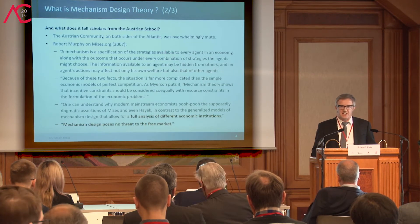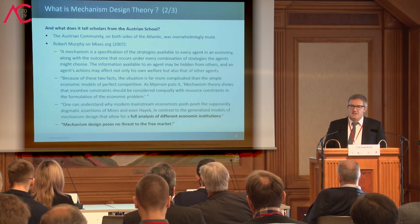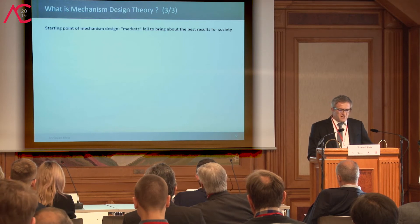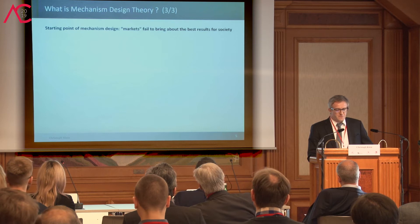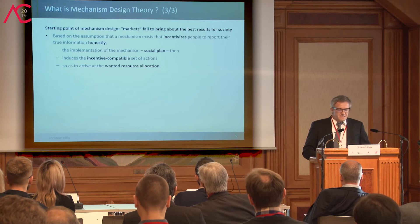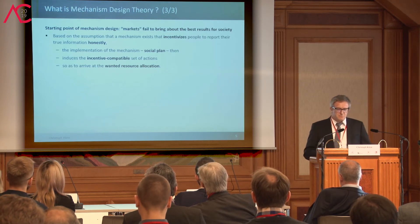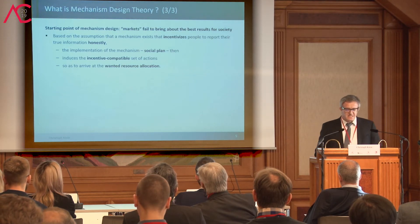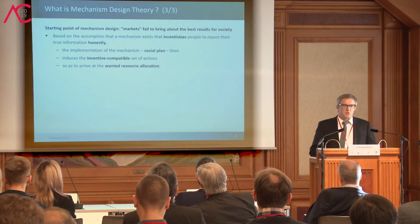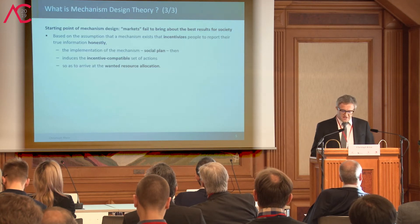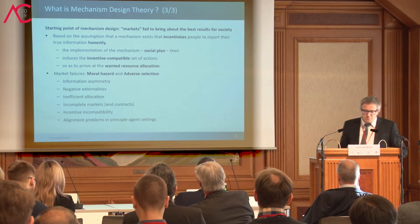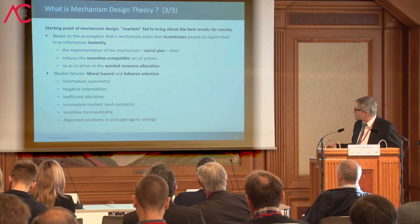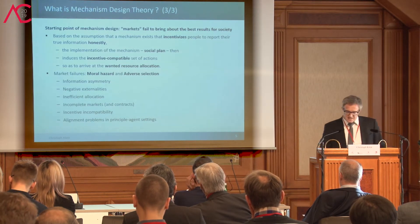Robert Murphy was the only one from the Austrian school that actually picked up on it. Let me try to contextualize where they're coming from. First of all, the assumption is that markets always fail. Based on the assumption that a mechanism exists that incentivizes people to report their true information honestly, you have a kind of benevolent dictator or public agency. The mechanism is a social plan, and they want an incentive-compatible plan to arrive at the wanted resource allocation. They mostly talk about moral hazard and adverse selection — the buzzwords being information asymmetry, negative externalities, inefficient allocation, incomplete markets, and principal-agent settings.